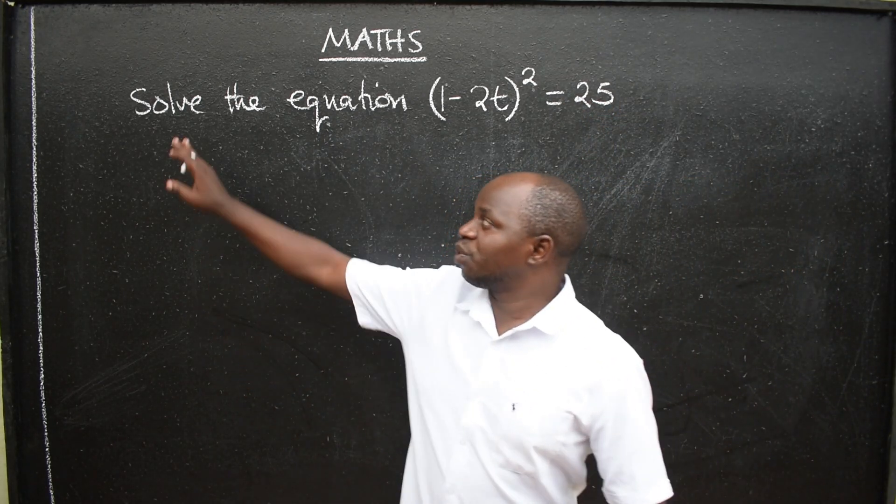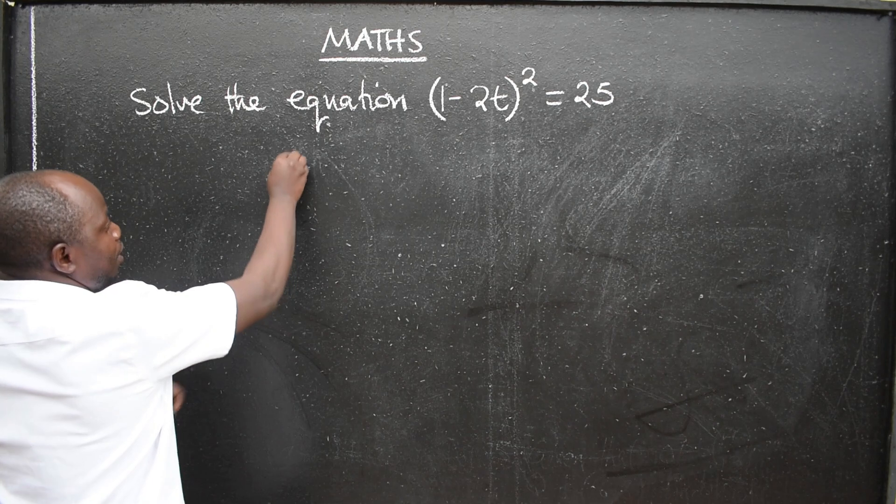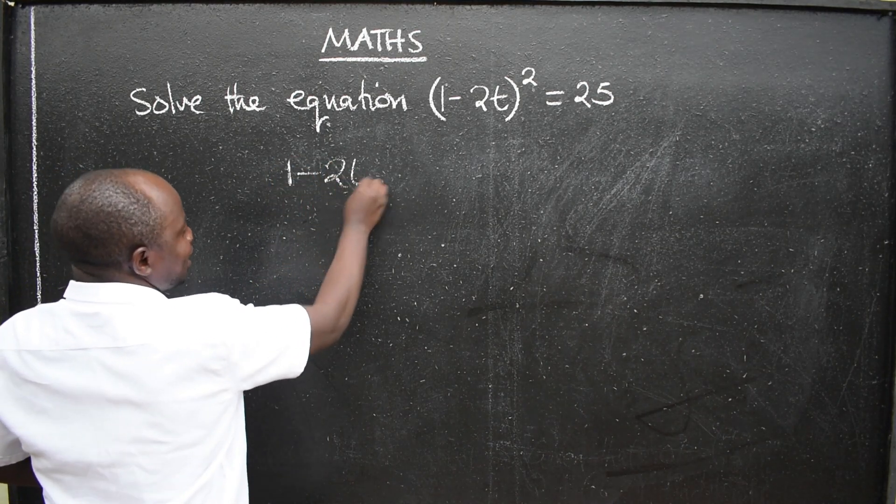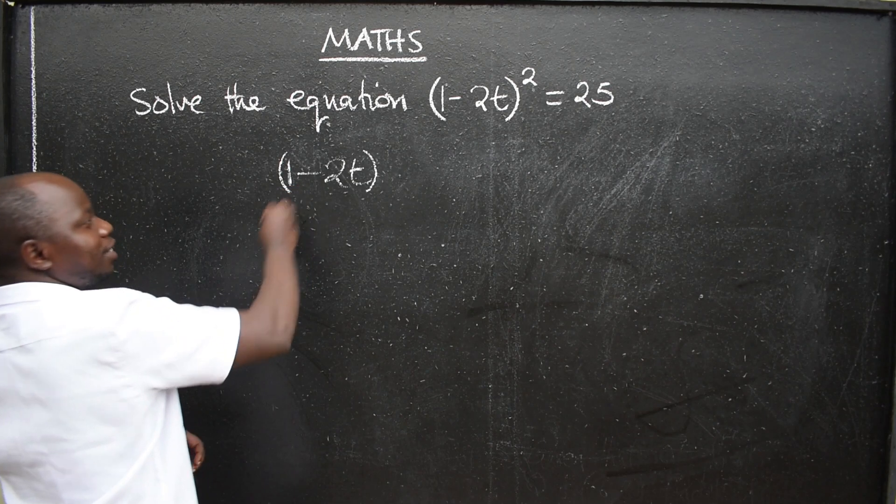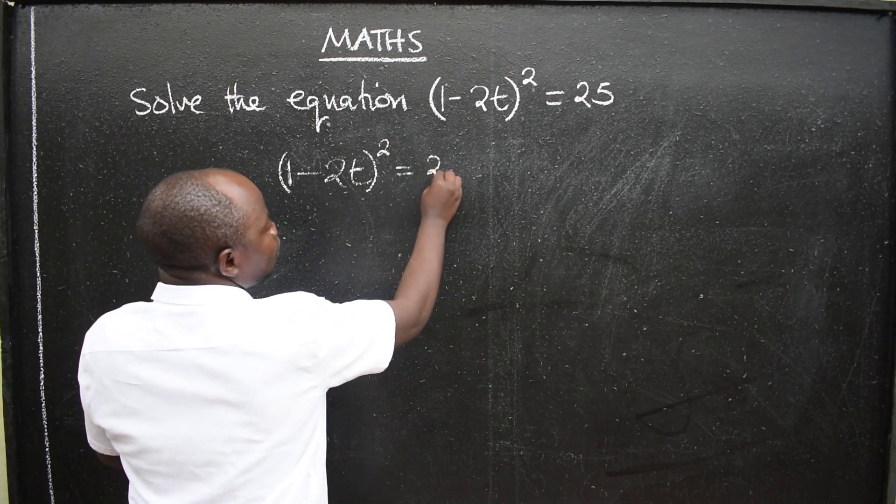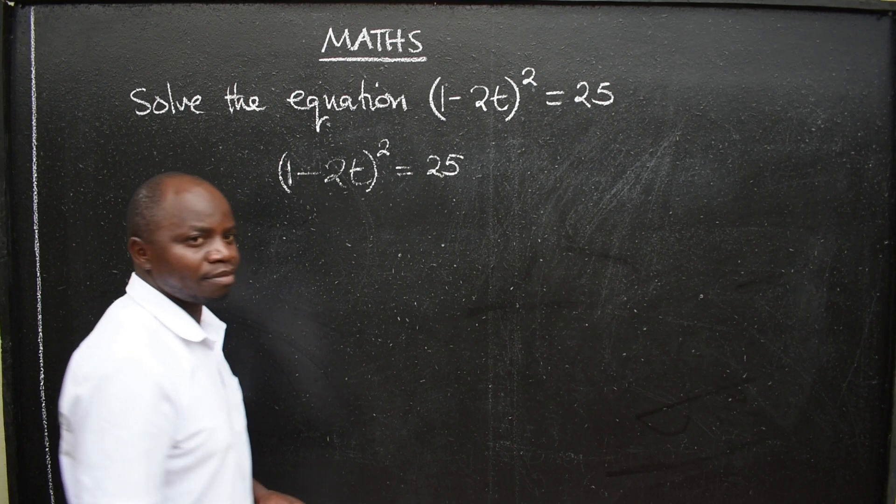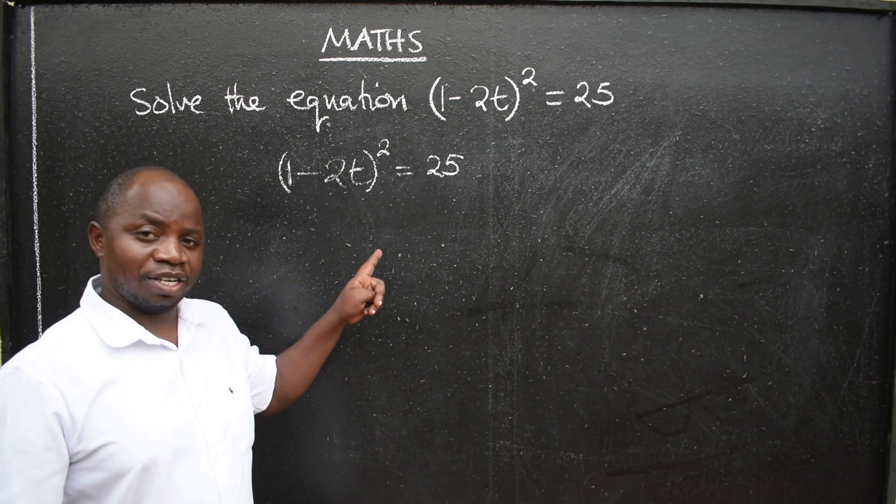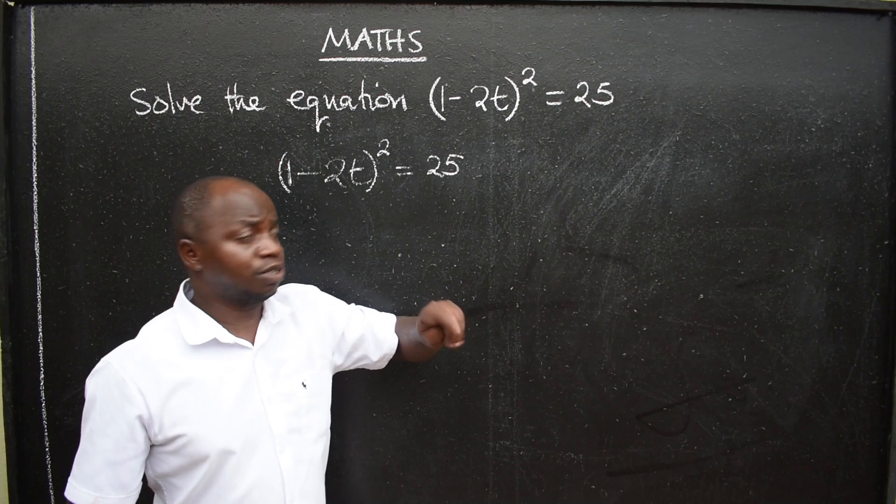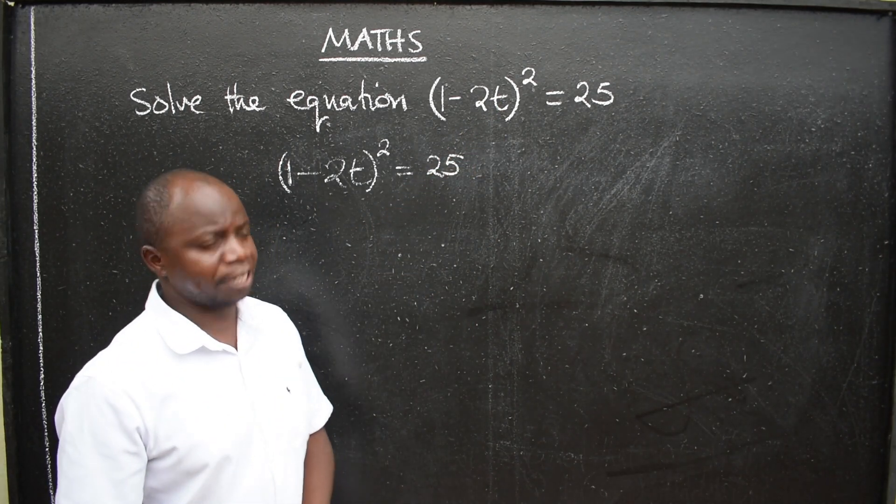We are told to solve. So you're going to copy the question: (1-2t)² = 25. This equation must produce two values of t. You should know that.